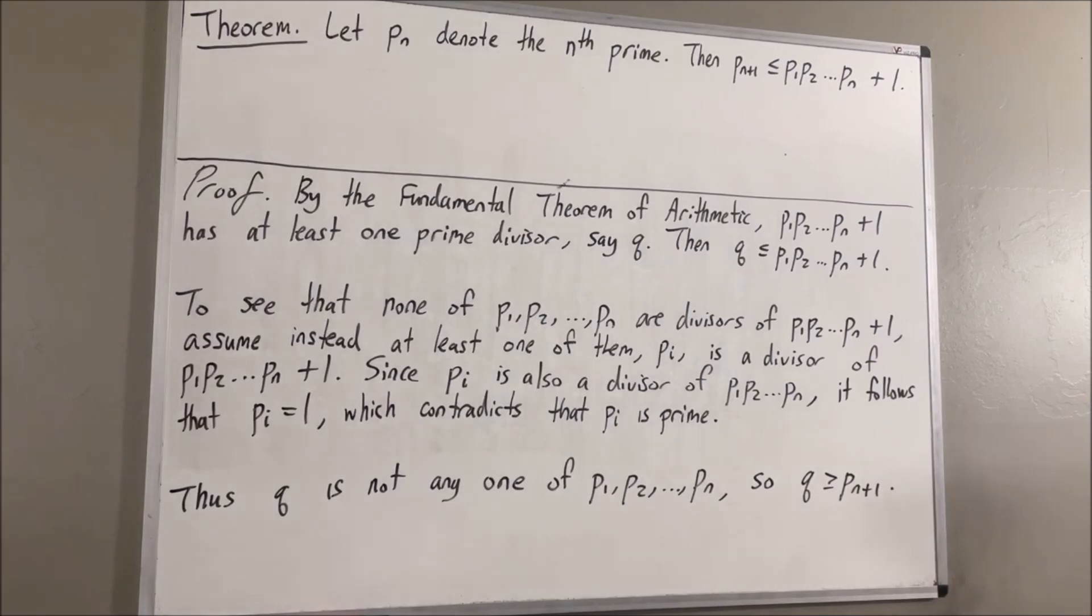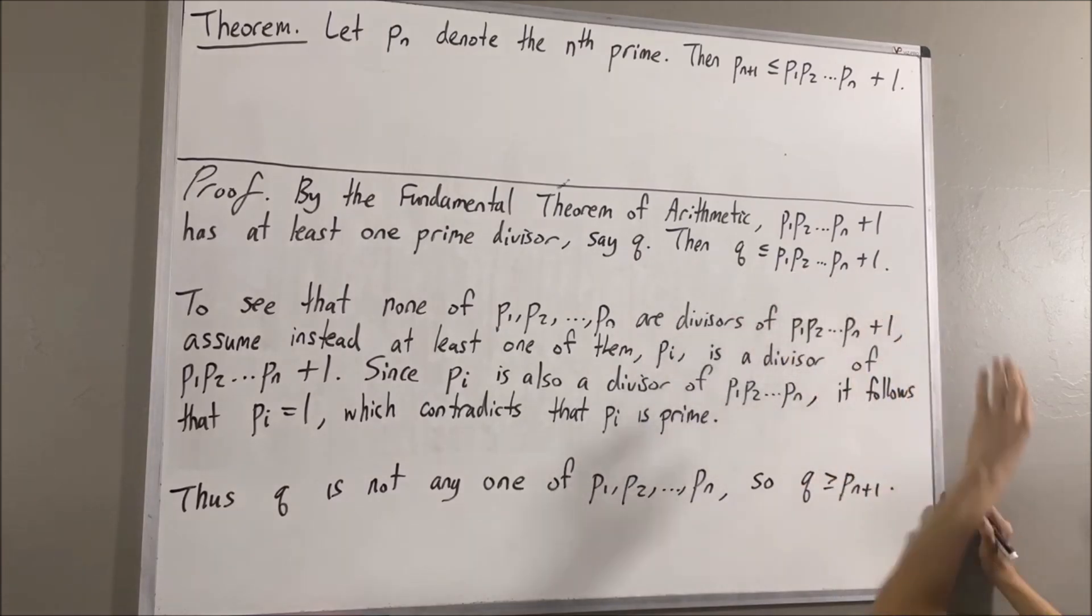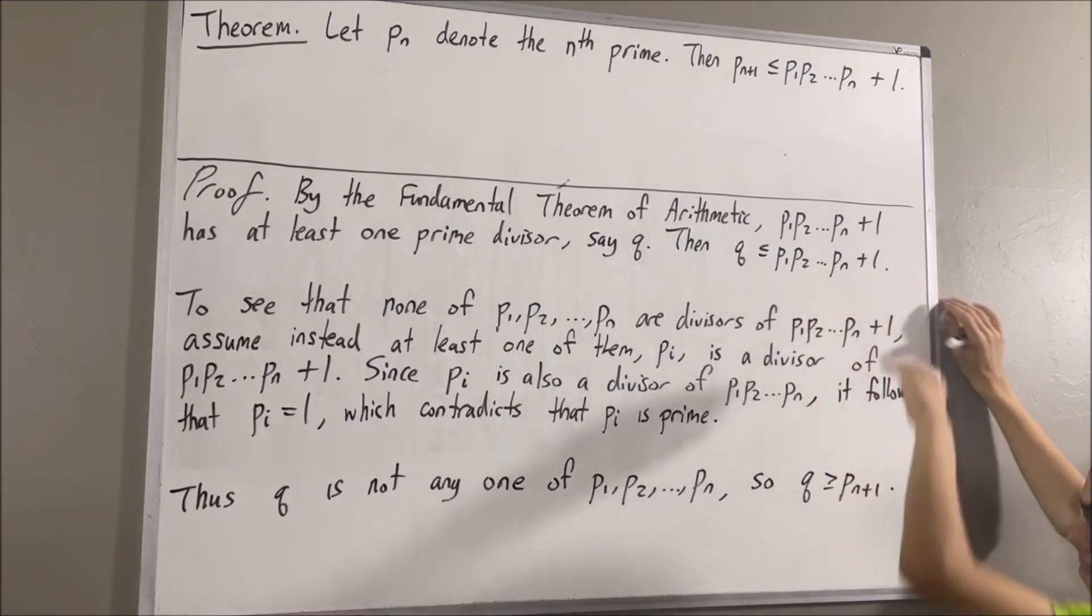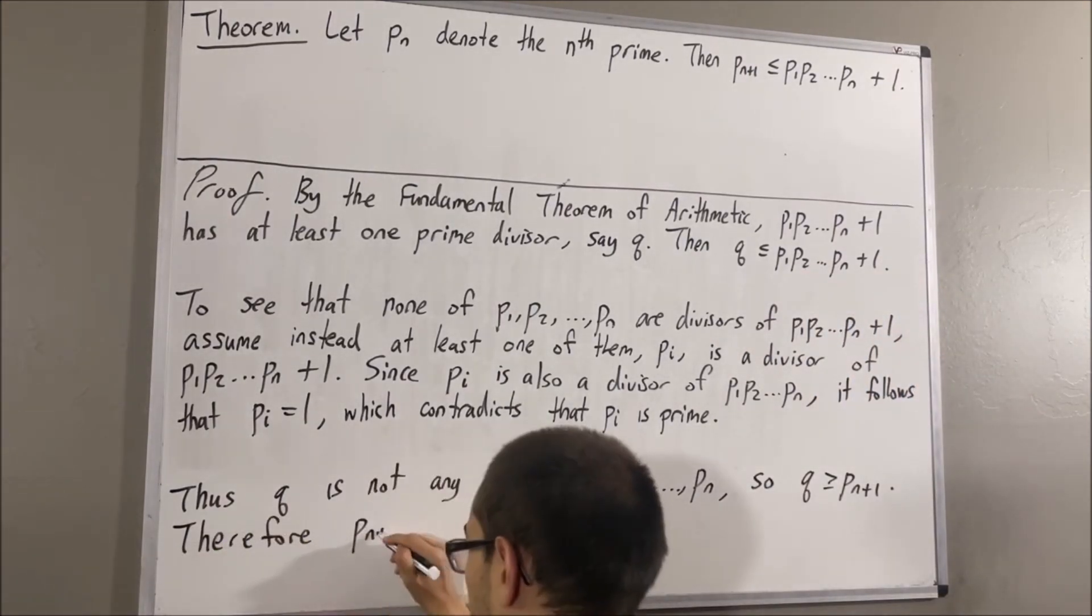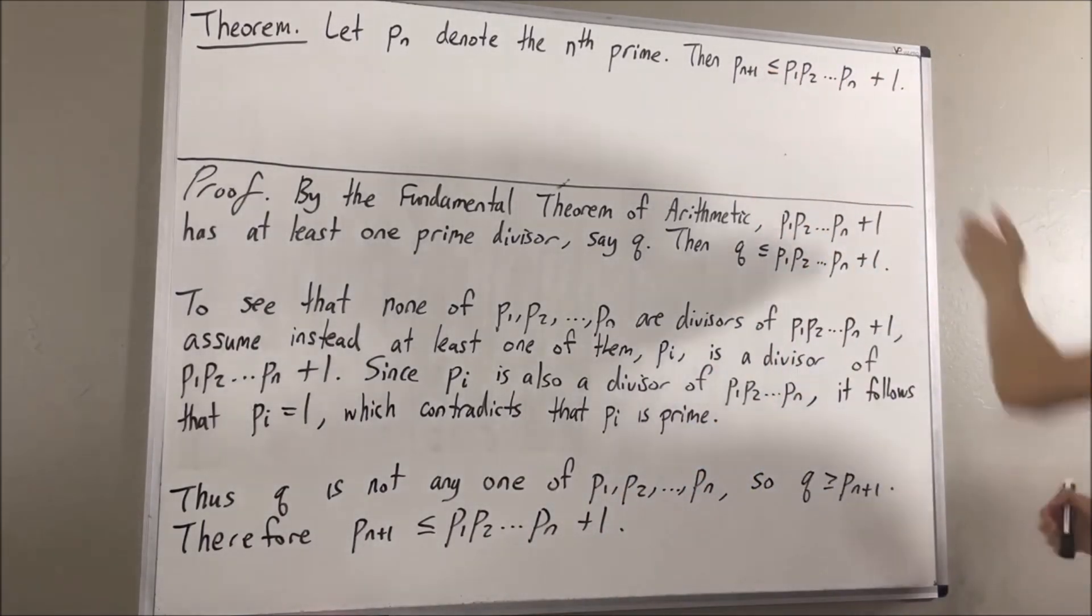We see now that P_n+1 is less than or equal to q, which is less than or equal to this quantity. Therefore, these inequalities tell us that P_n+1 is less than or equal to this quantity. And that is exactly what we wanted to prove.